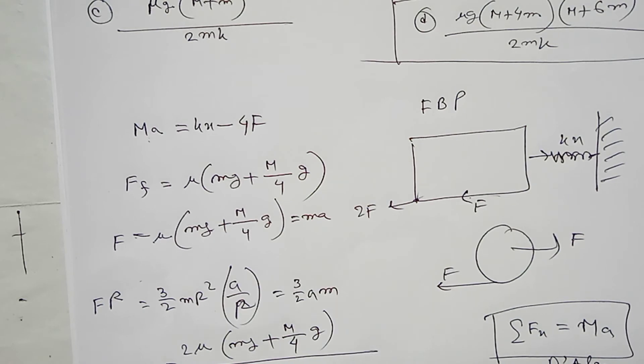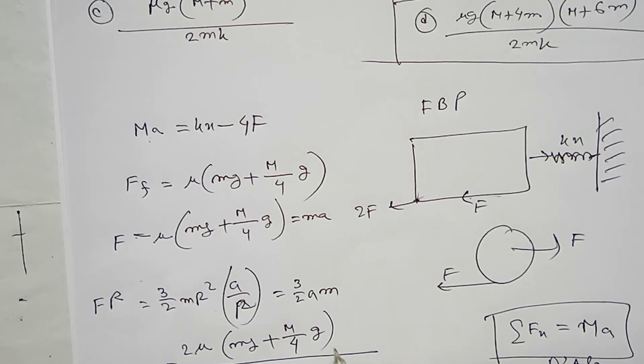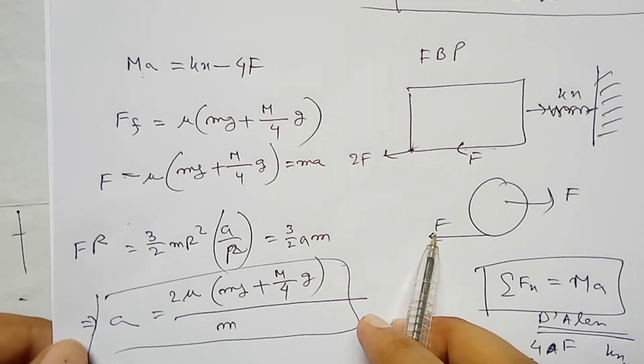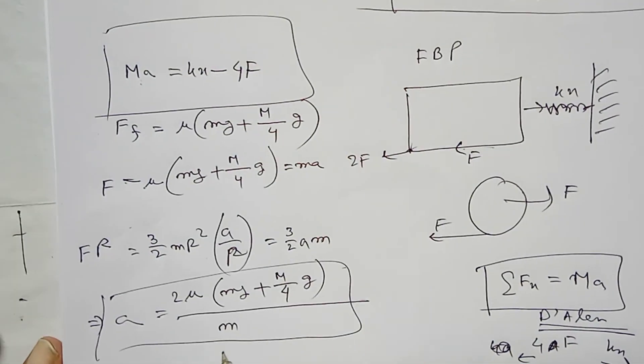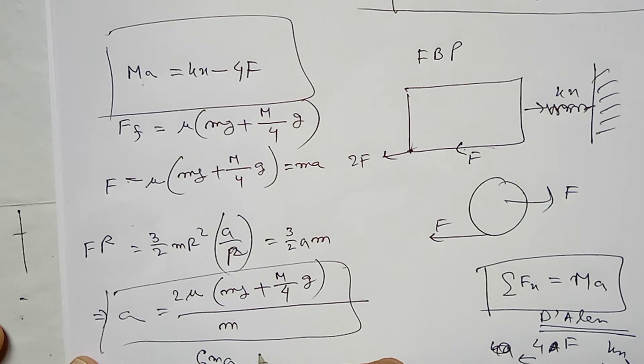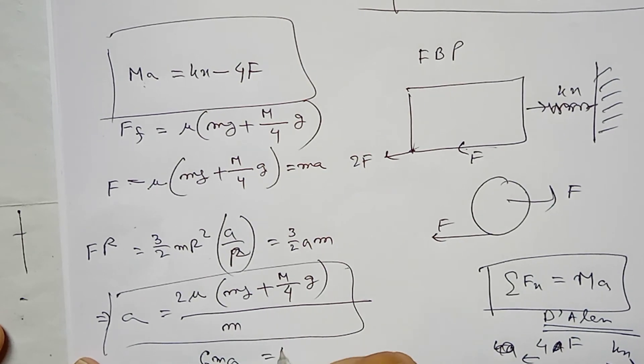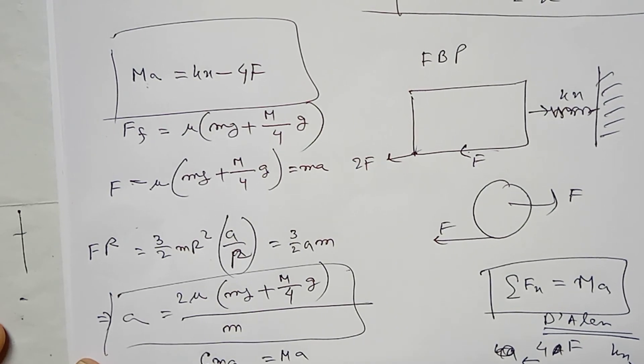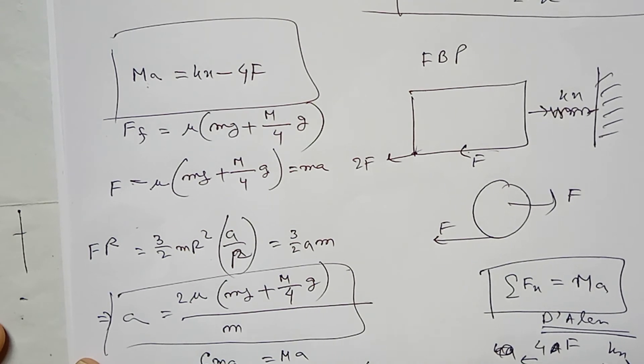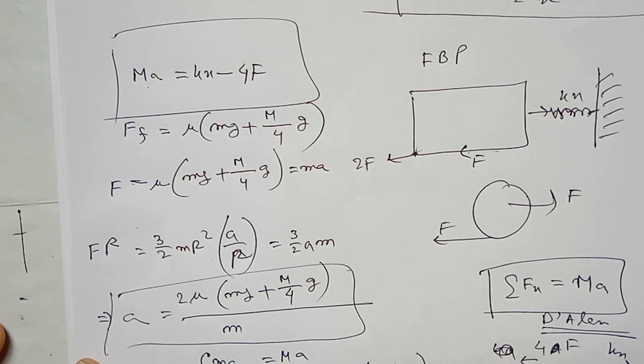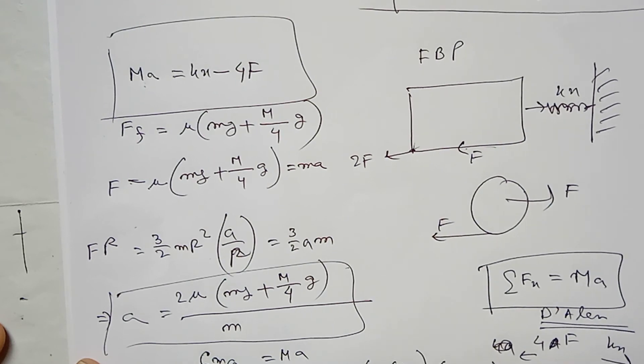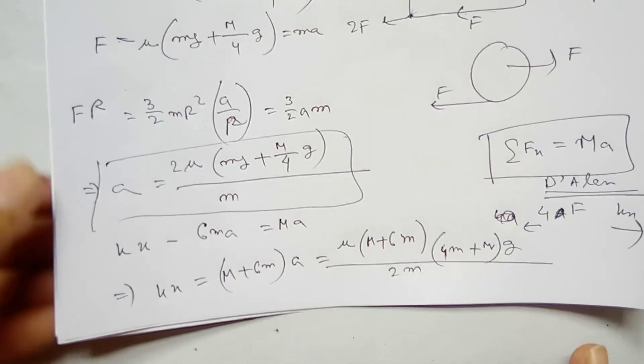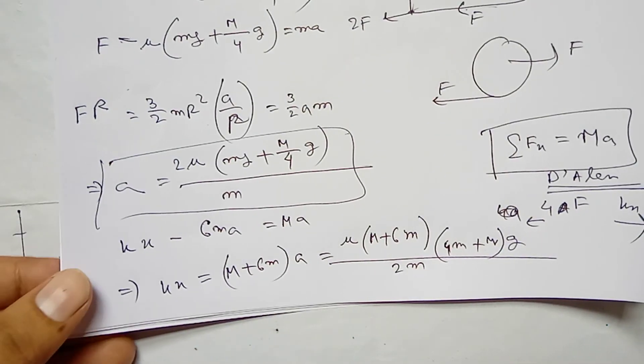From this value, we'll put it in the equation. KX equals this value. Substituting, KX minus 6ma equals ma. KX equals mu (m plus 6m) divided by (4m plus m) times g divided by 2m. So ultimately the answer will be x equals mu (m plus 6m) (4m plus m) g divided by 2mk.